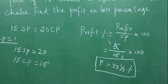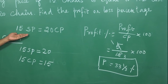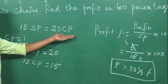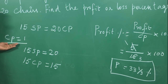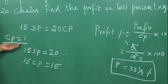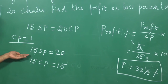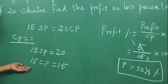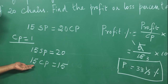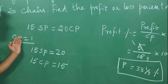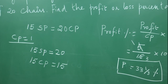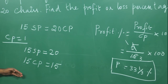To summarize: the question is — 15 articles selling price is equal to 20 articles cost price. Considering cost price as 1 rupee, 15 articles selling price equals 20 rupees. Similarly, 15 articles cost price equals 15 rupees, since cost price is 1 rupee per article.